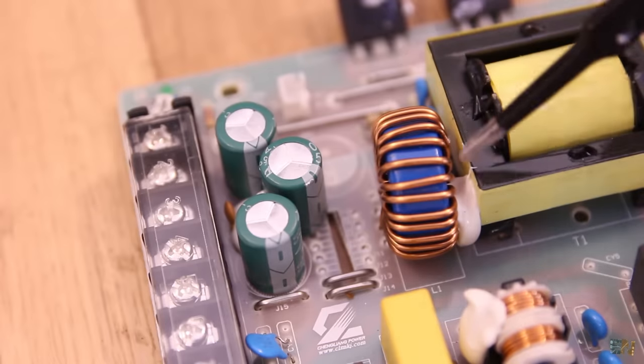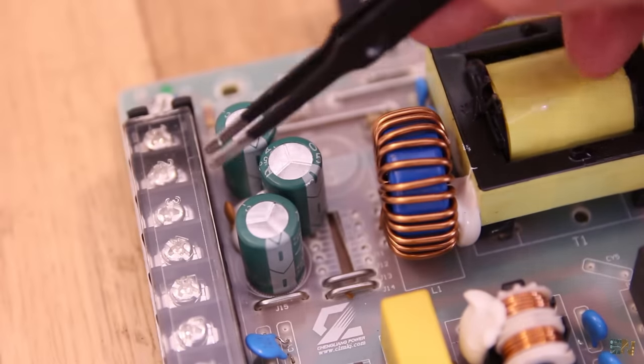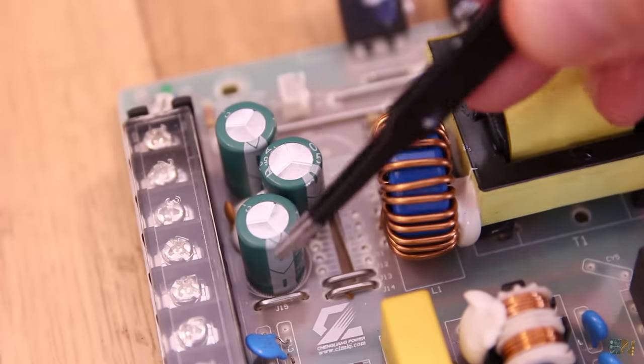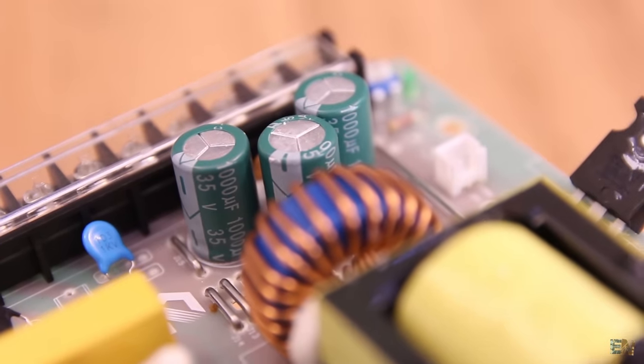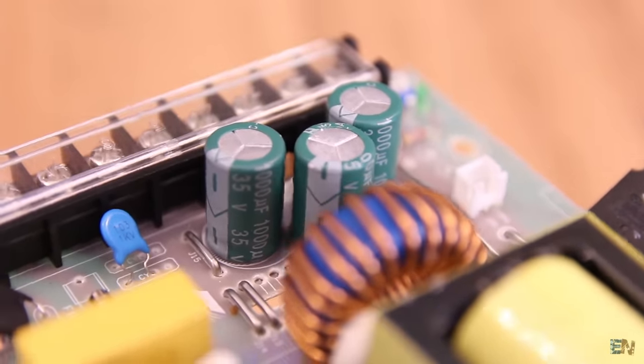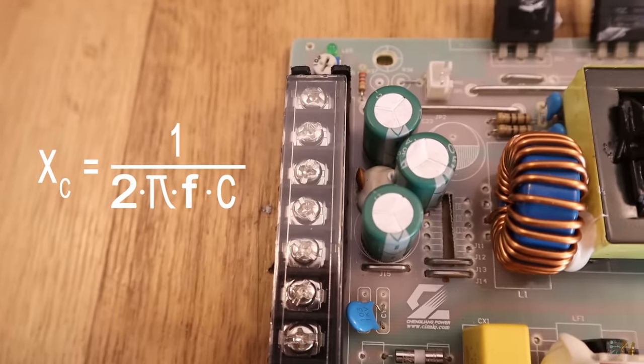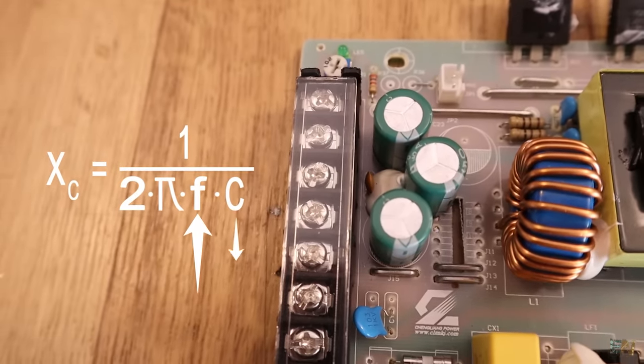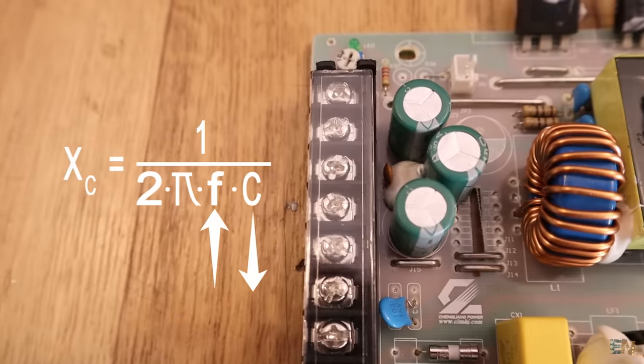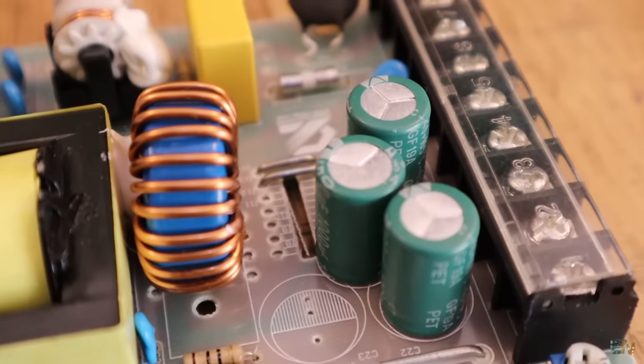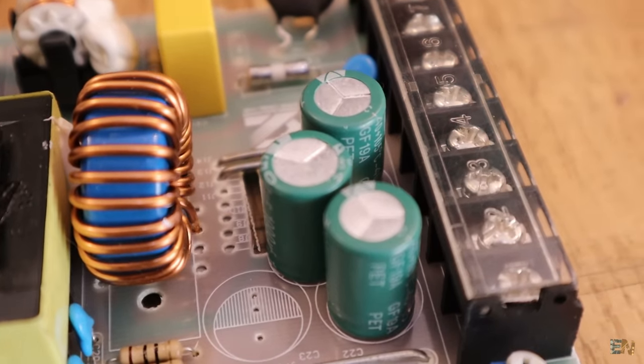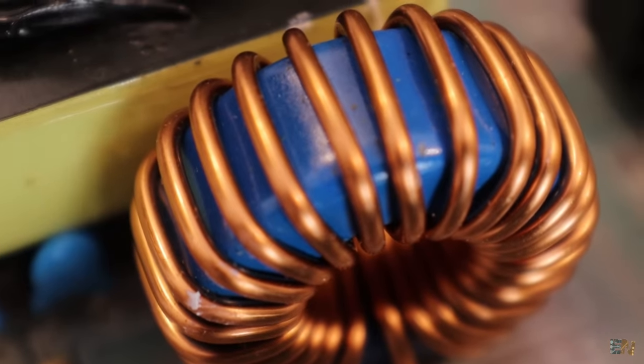Finally, we have the secondary filter, which is made up of a coil and some low value capacitors. This can be low value because now we are working at higher frequencies. By this formula here, the higher is the frequency, the lower could be the capacitor value. So the coil together with the capacitors will create an LC filter and smooth the output to the required DC value.